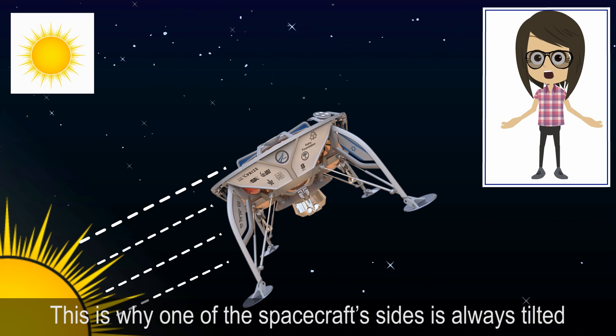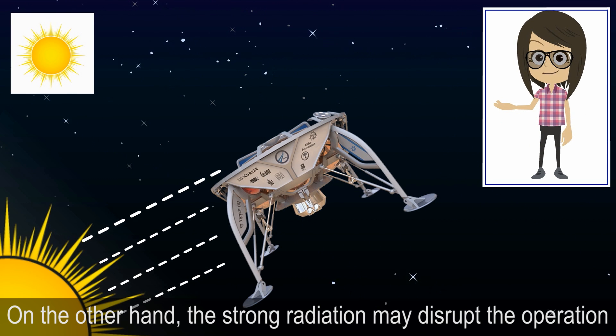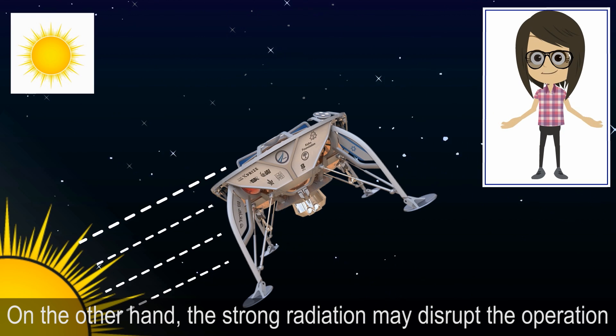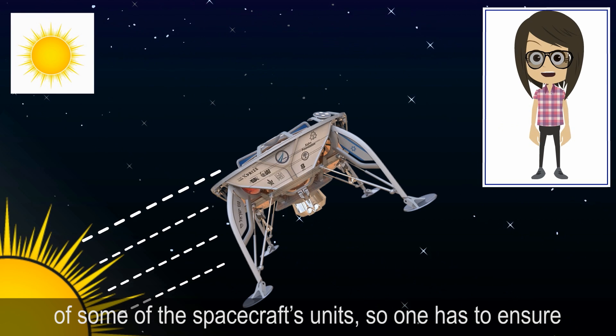This is why one of our spacecraft's sides is always tilted towards the sun. On the other hand, the strong radiation may disrupt the operation of some of the spacecraft's units, so one has to ensure that these units are resistant to such influence.